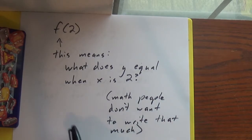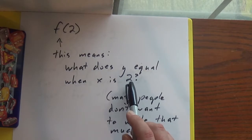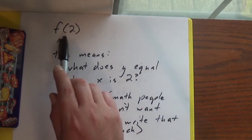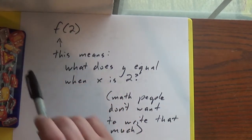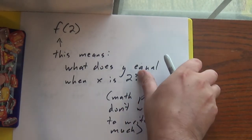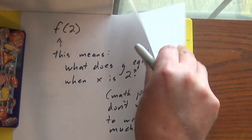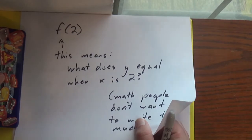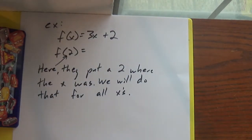Math people don't like writing that much. So instead of writing, what does y equal when x is 2? That's a whole sentence and this is a letter, parentheses, and a 2. It's smaller. Mathematicians are hardworking unless you want them to write. When it comes to writing, they prefer shorter.